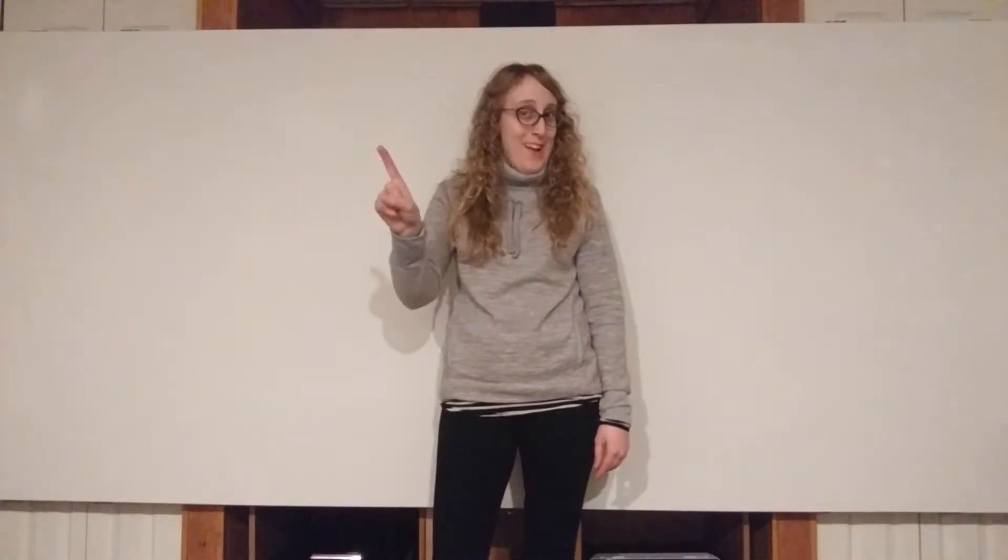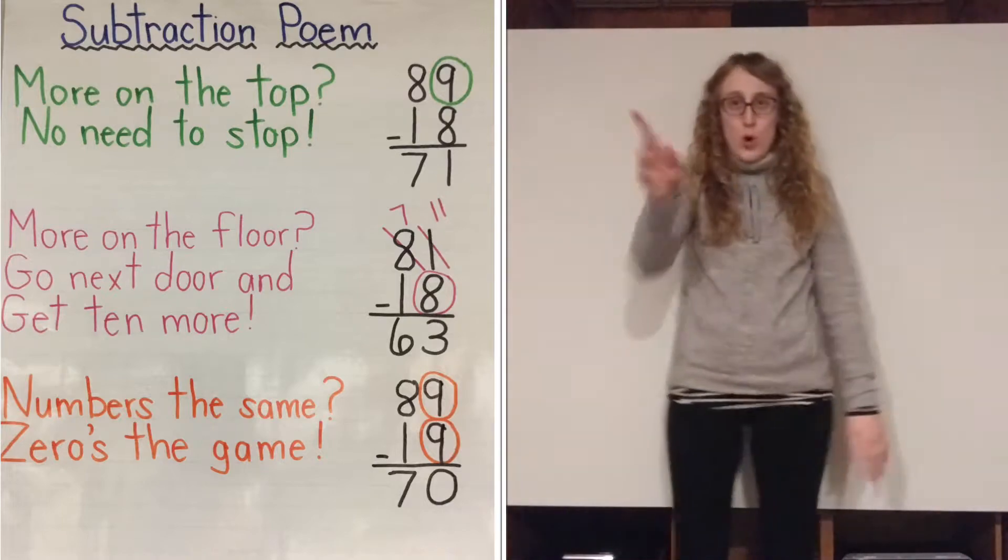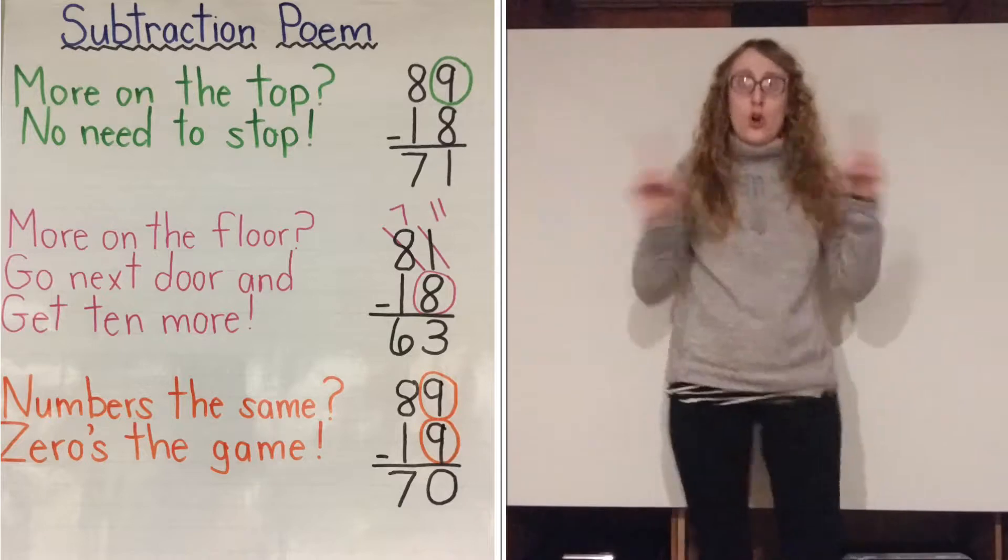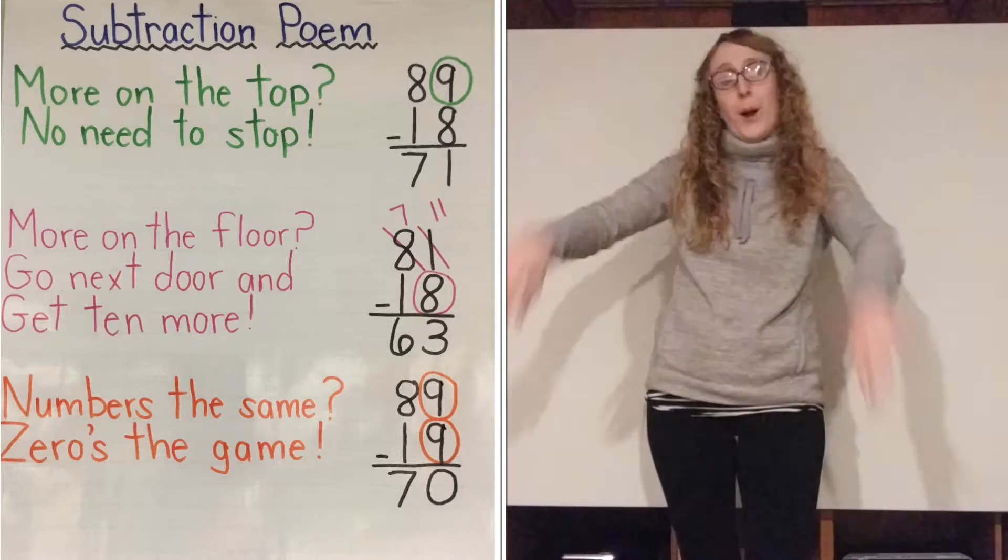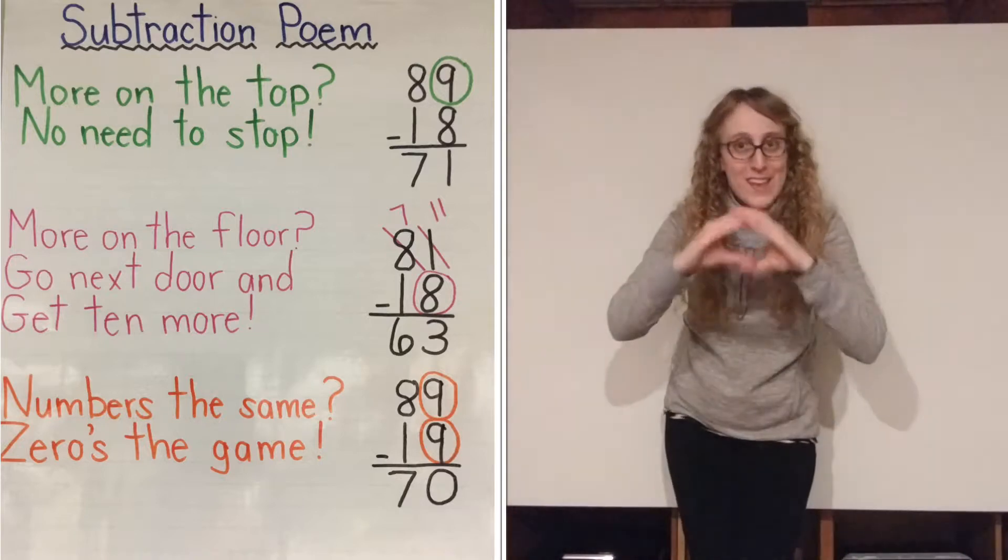And we are going to say the poem with big gestures and loud voices together on three, two, one. More on the top, no need to stop. More on the floor, go next door and get ten more. Numbers the same, zeros the game.